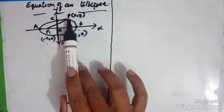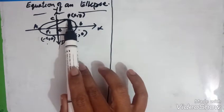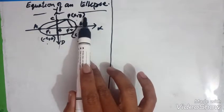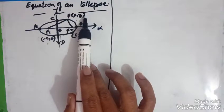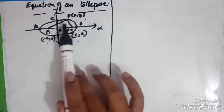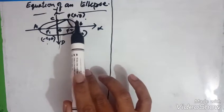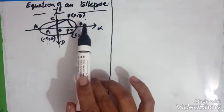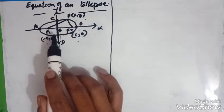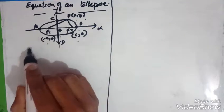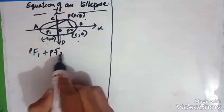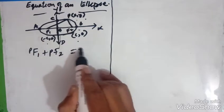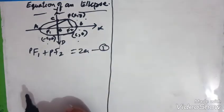Let us take one point on the ellipse, that is P(x, y). The sum of the distances from P to the two foci is 2A. So that is given by PF1 + PF2 = 2A. This is the first equation.